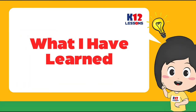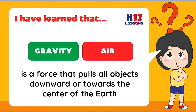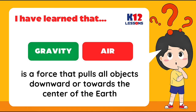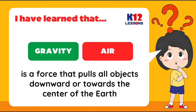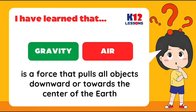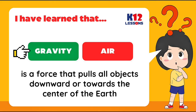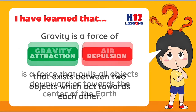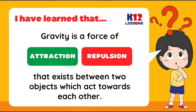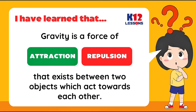What I have learned. Complete the following statements by choosing the word that best completes each sentence. I learned that gravity acts as a force that pulls all objects downward or towards the center of the Earth. Gravity is a force of attraction — not repulsion — that exists between two objects which act towards each other.